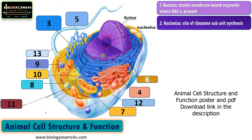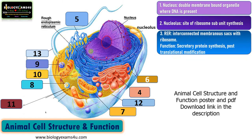Moving outside the nucleus, the next organelle is rough endoplasmic reticulum, and this is the only organelle that has a direct connection with the nuclear membrane. RER is called rough endoplasmic reticulum as it is studded with ribosomes. It is an interconnected membranous sacs where ribosomes are present, attached to the RER by means of ribophorin proteins. The function of RER, as ribosomes are present, is protein synthesis — especially secretory and membrane proteins. It is also a site of post-translational modification.